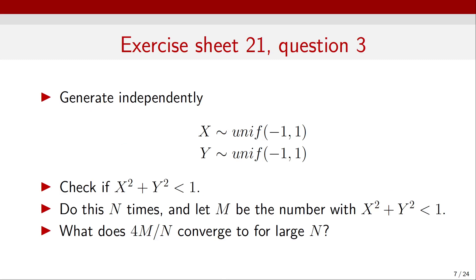The exercise involves generating independently a number x uniformly distributed between minus 1 and 1, and another independent random number y also uniformly distributed between minus 1 and 1. We then check if x and y are within the unit circle — that means checking if x squared plus y squared, which is the radius squared, is within the radius of the circle which is 1. We do this n times, and if m is the number of points that fall within the unit circle, we look at the quantity 4m over n.